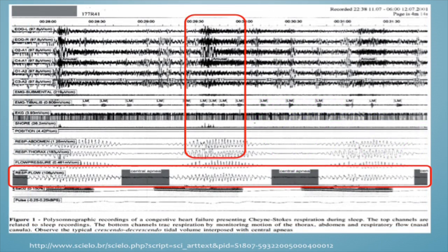Moving into more channels — this is a polysomnograph trace. As you can see there are many, many channels to display and observe, so it takes a trained eye and time to validate this data. During periods of increased effort you're getting arousal in the EEG traces — it's taking the patient out of a deep sleep and putting them into a lighter sleep.